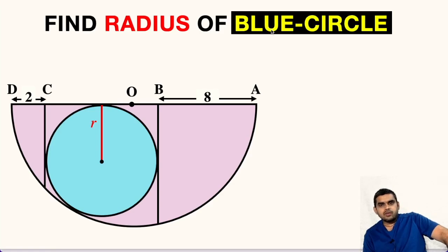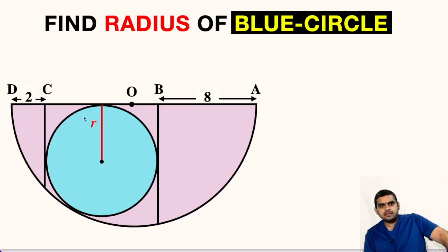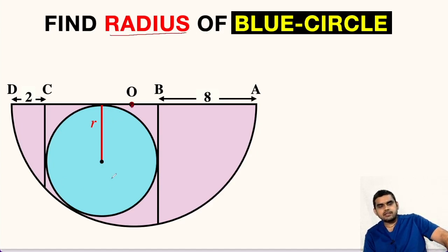Welcome to my YouTube channel. I am back with another interesting question. As shown in the figure, we have a semicircle whose center is at point O. Inside it we have a circle shaded in blue color, and we are asked to find the radius of this blue shaded circle. To solve this question, let us assume that the radius of this semicircle is capital R.